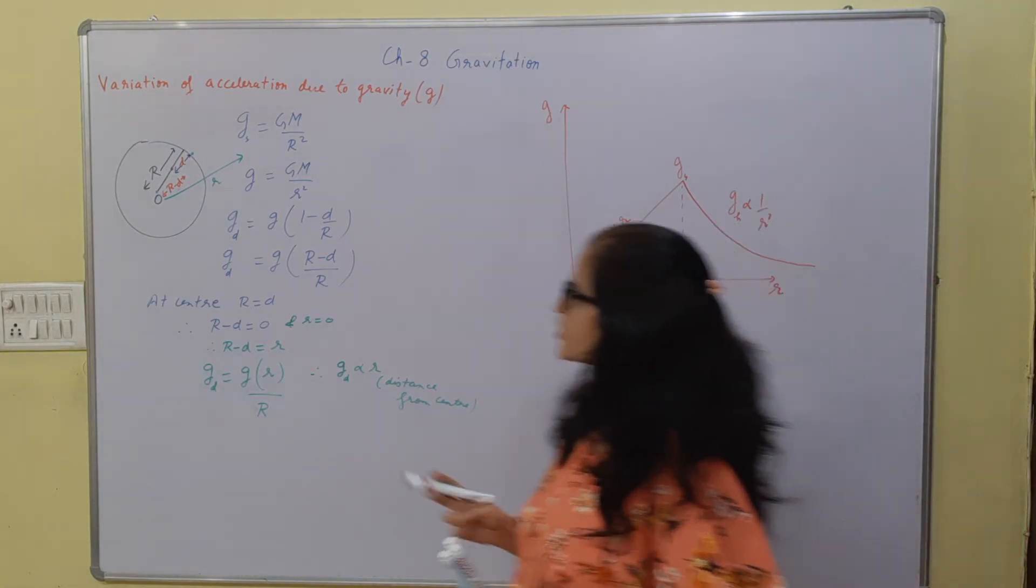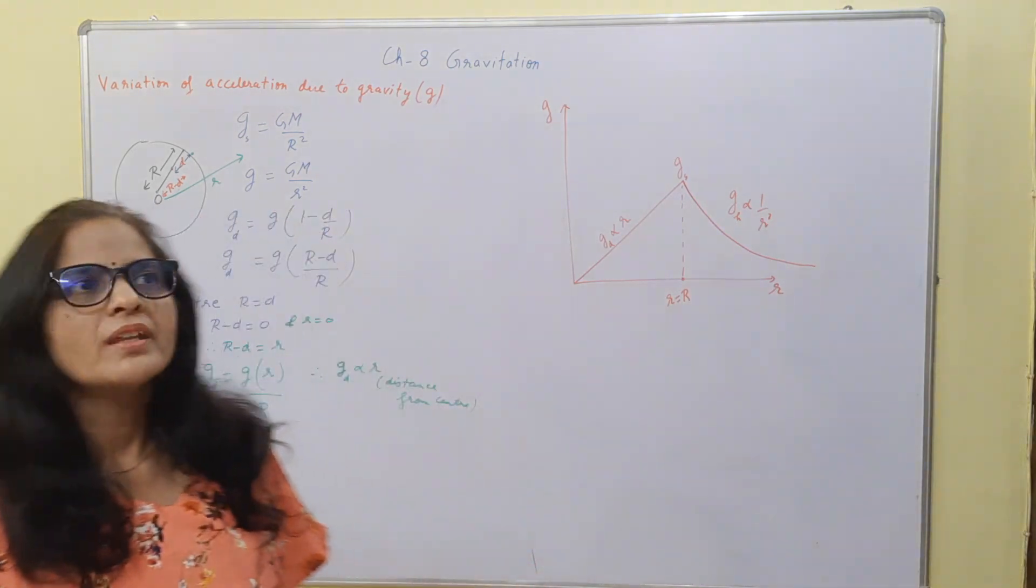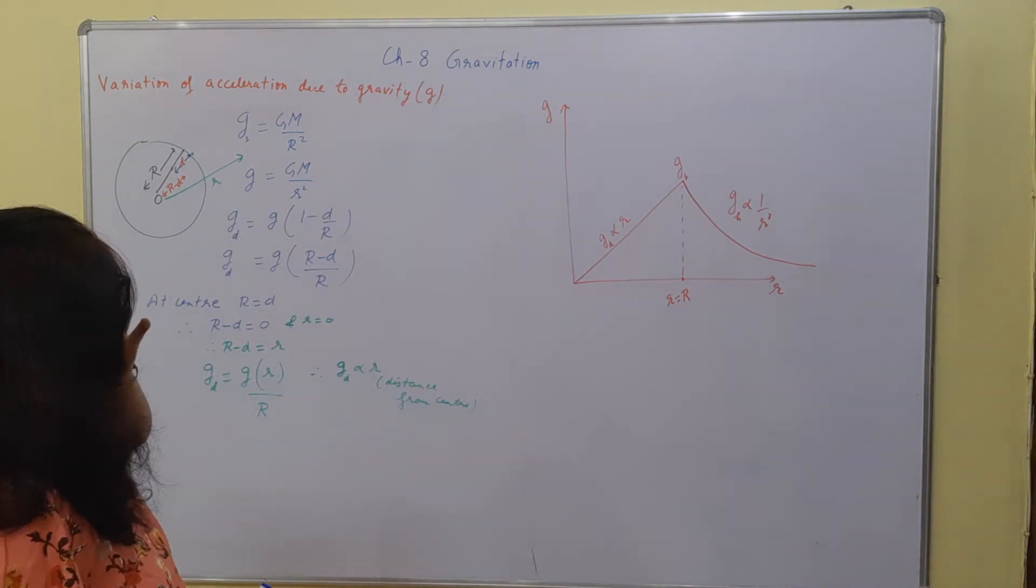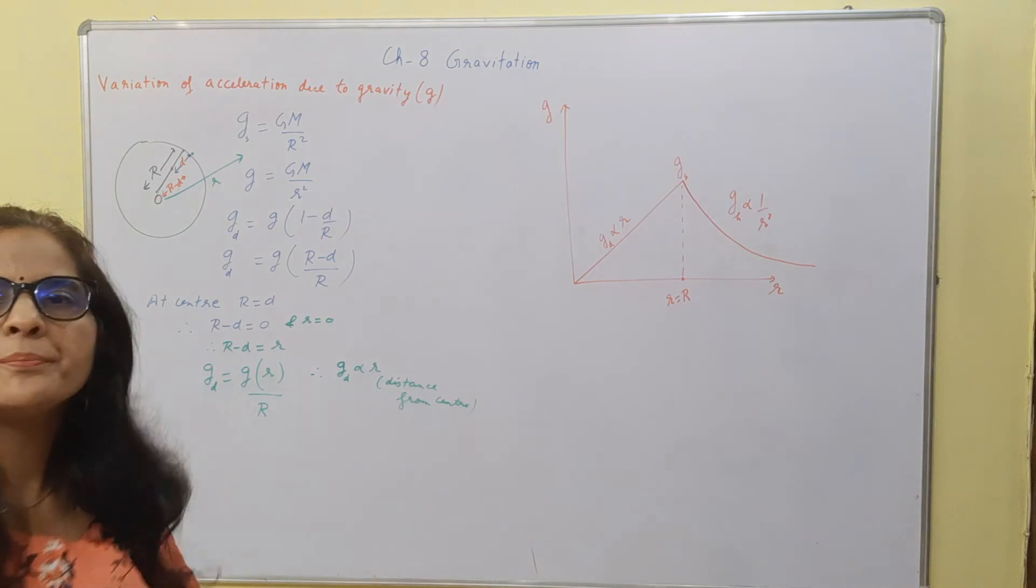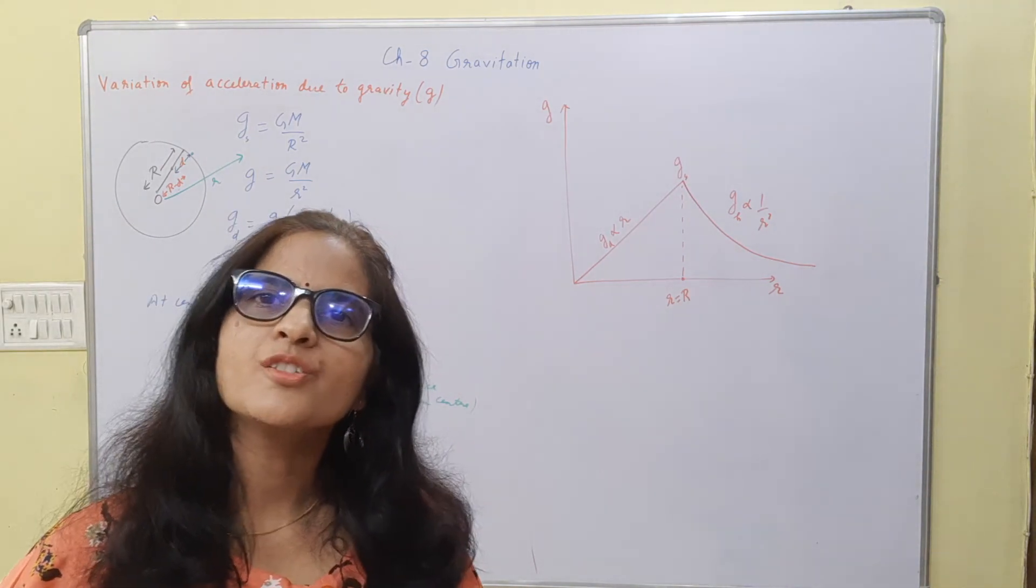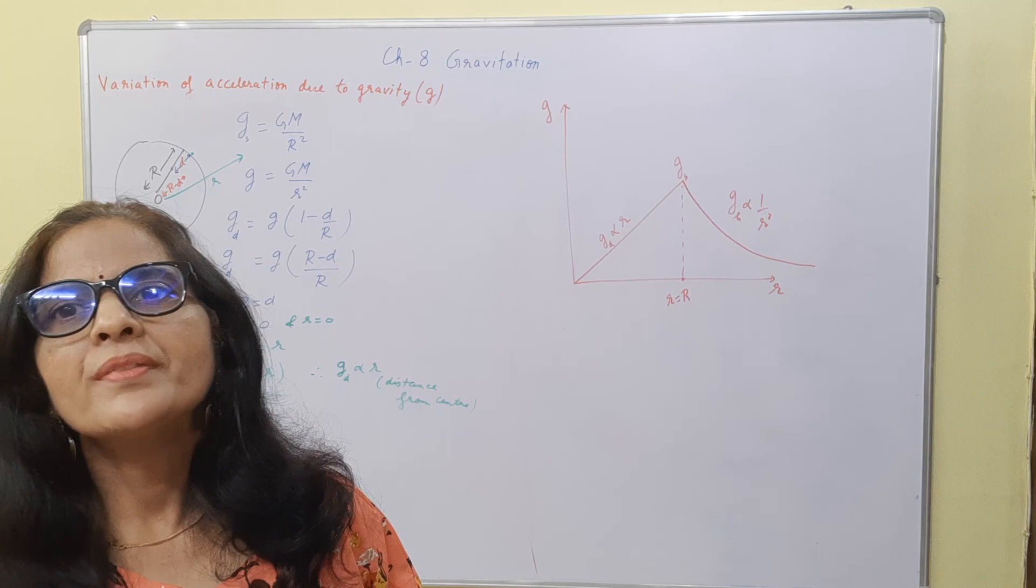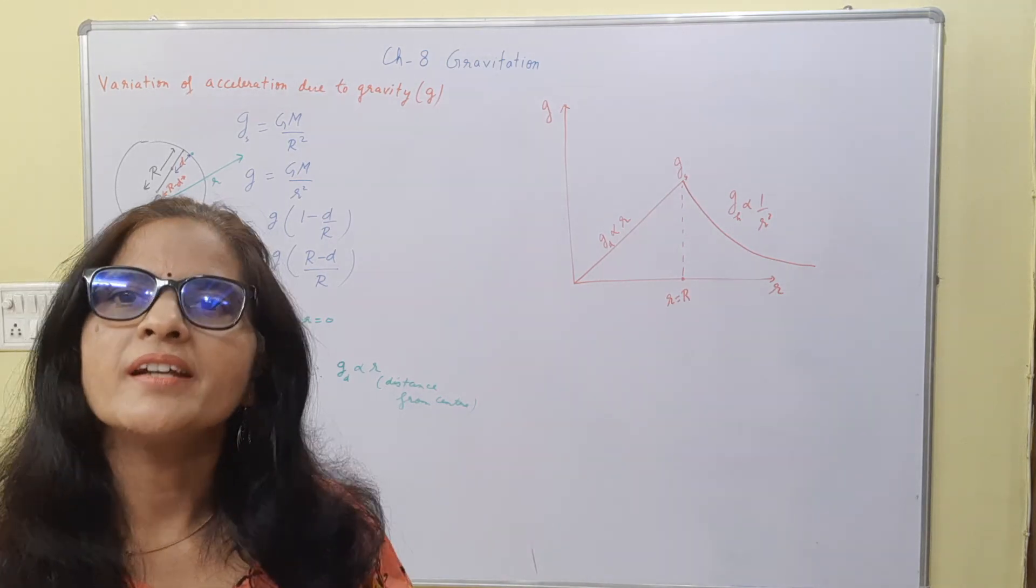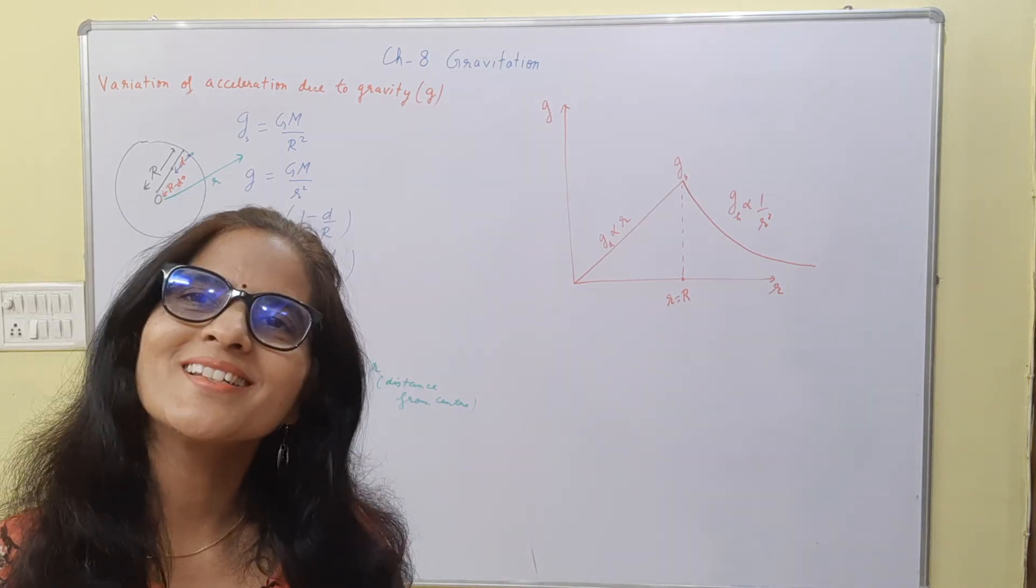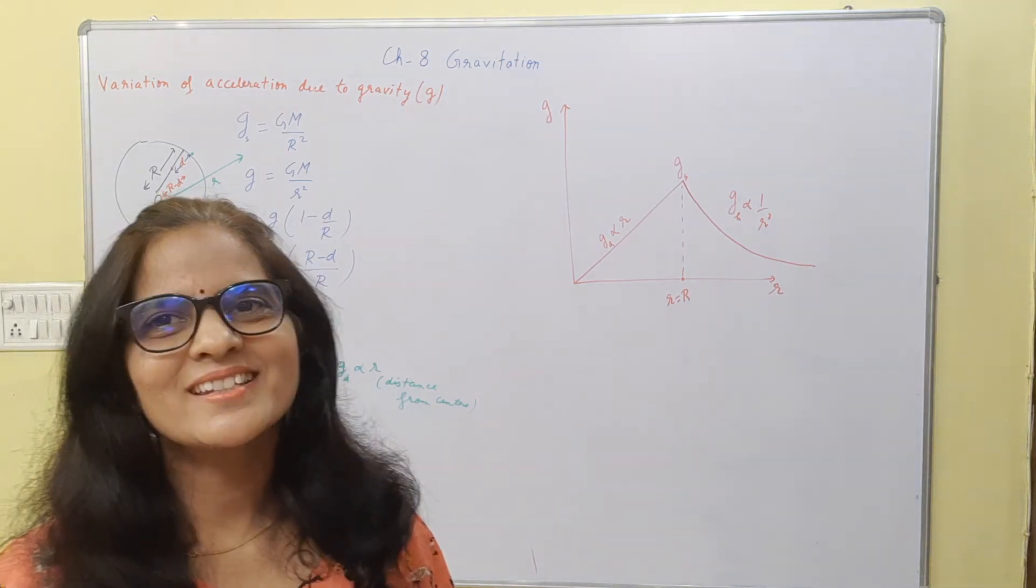So this was the variation of acceleration due to gravity. Here it is as a function of distance from the center. This graph represents the variation of g versus distance from the center of the earth. I hope that's clear. That's all for now. Have a nice day.